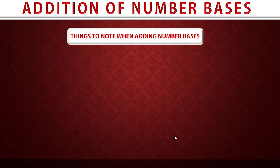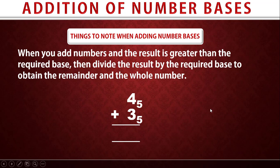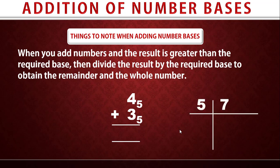Another thing to note: when you add numbers and the result is greater than the required base, what you need to do is divide the result by the required base in order to obtain the remainder and the whole number. For example, four plus three gives seven, and seven is higher than the required base of five, so we divide seven by five.